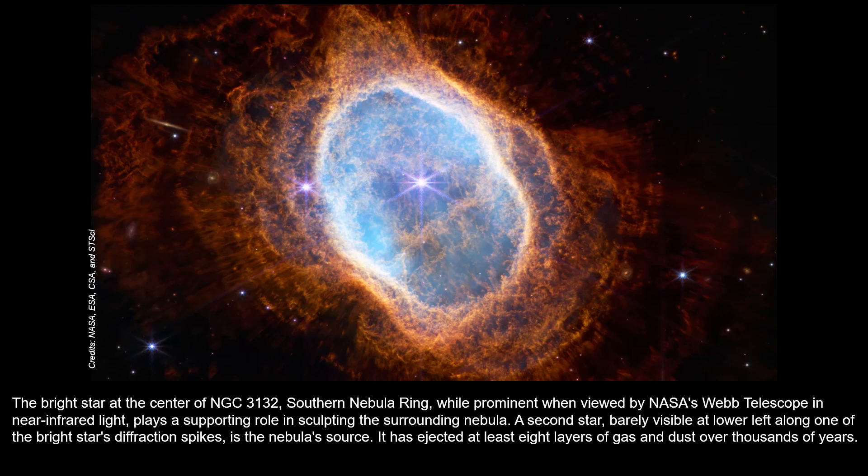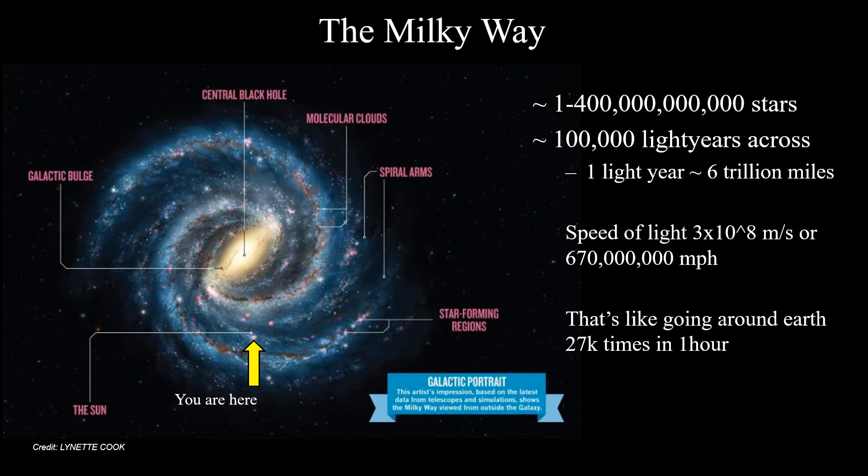Here's one more image taken from James Webb in the last year — this is NGC 3132, the Southern Ring Nebula. This is a nebular source: an area that has an ejecta of about eight layers of gas and dust that has been ejecting over thousands of years, and we can actually see these rings. We'll talk about why this is important in a minute, because this material ejected from certain stars is what we believe may have triggered our own solar system's formation and also contributed many of the elements we see in our own solar system.